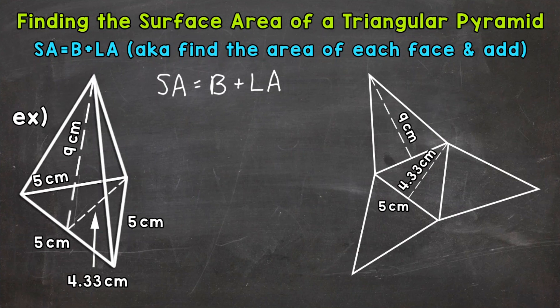You can think of a net as an unfolded 3D shape — it shows us all of the parts. Let's start with the area of the base. This triangle right here is our base.